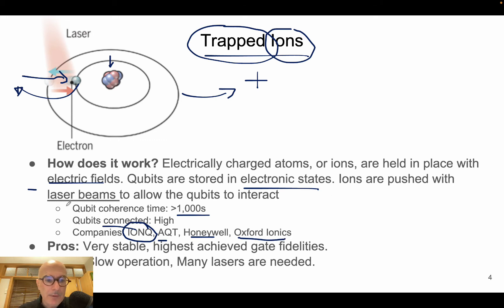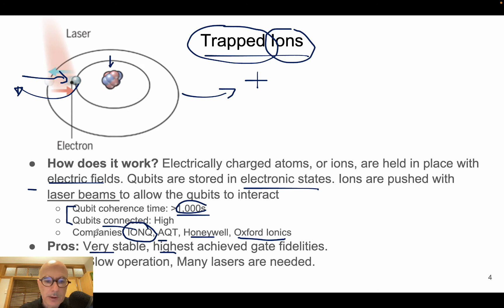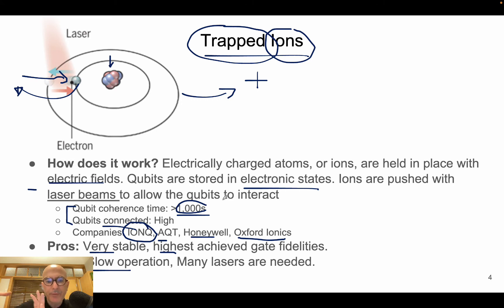The advantages of trapped ions include very large coherence time — very stable — and high-quality gate implementations. The disadvantages are that operations on trapped ions qubits are slow, and quite a few lasers are needed for ionizing the atoms and allowing different qubits to interact. These are quite interesting experimental facilities if you look online at how a trapped ions machine looks.